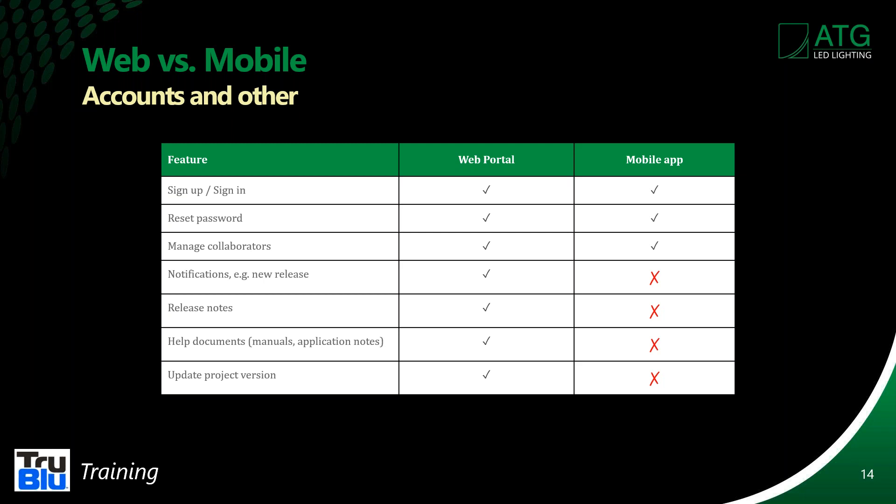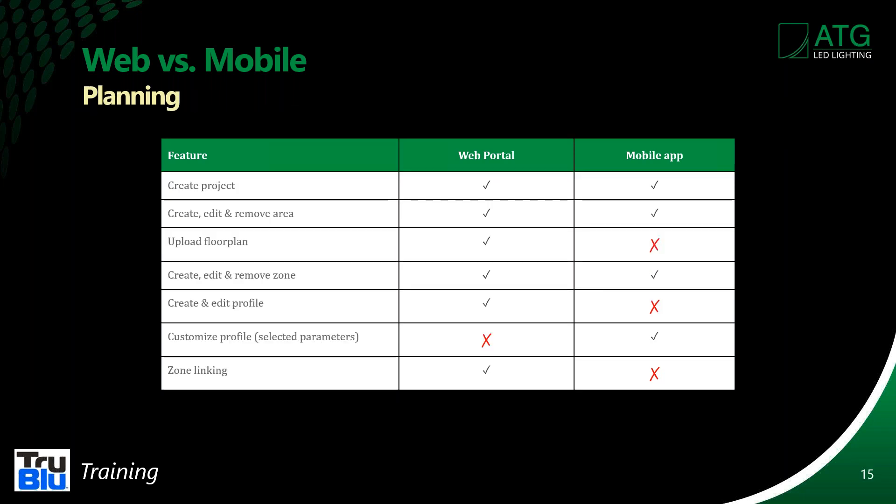There are a lot of different things you can do on both the portal and app, and some you can do only on the portal. The main things that can only be done on the web portal are notifications of new releases, help documents and manuals, and updating the project version. In the planning phase, you can create the project, create/edit/remove areas, update a floor plan, and zone linking is only available on the portal.